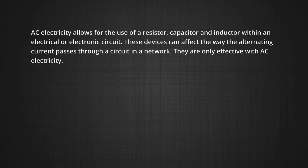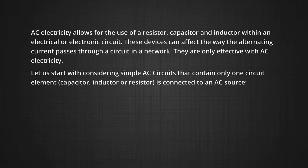As we know, AC electricity allows for the use of resistors, capacitors, and inductors within an electrical or electronic circuit. These devices can affect the way alternating current passes through a circuit or network, and they are only effective with AC electricity. Let us start by considering a simple AC circuit containing only one circuit element — say a resistor, inductor, or capacitor — connected to an AC source.